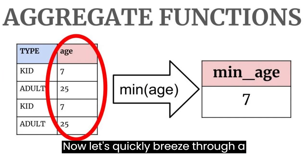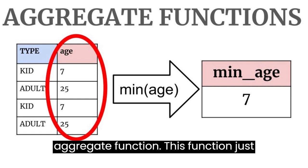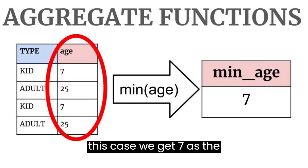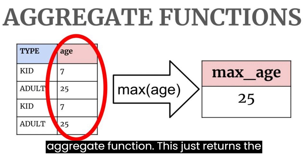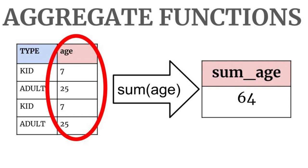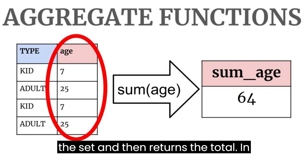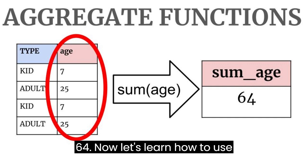Now, let's quickly breeze through a summary of three more very common aggregate functions. We have the minimum aggregate function. This function just returns the minimum value in our set. In this case, we get 7 as the smallest age. Then we have the maximum aggregate function. This just returns the largest value, which in our case is 25. Finally, we have sum. This function just adds all the values in the set and then returns the total. In our case, all the ages add up to 64.